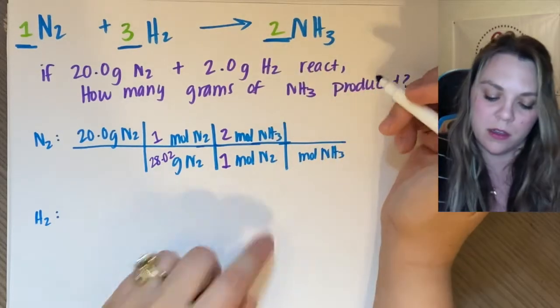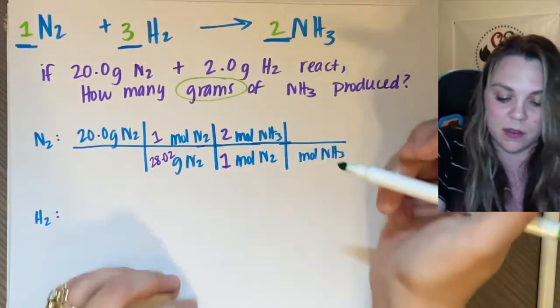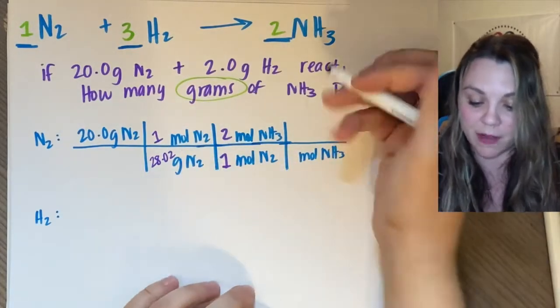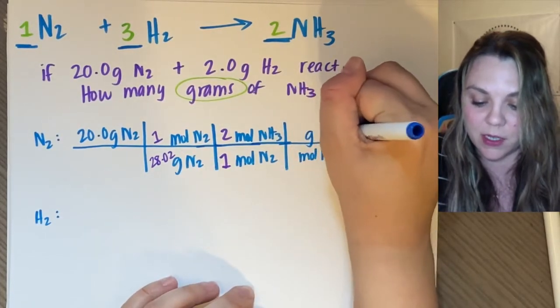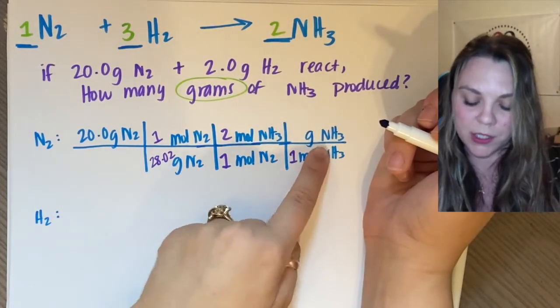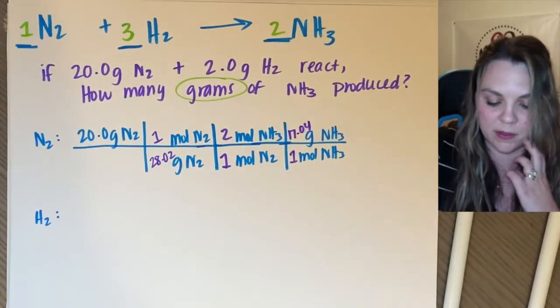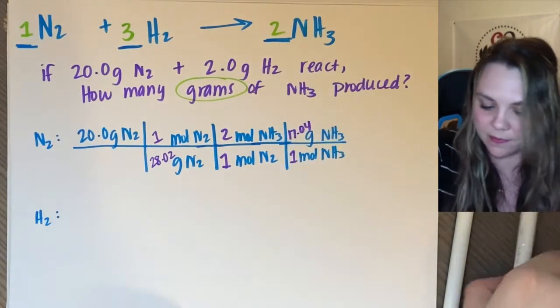And then NH3, you need to get grams. It's asking for grams of NH3. So now I need to actually find grams of NH3. And to do that, I use molar mass again. So one nitrogen, three hydrogens is going to be 17.04 grams. And squish that in.